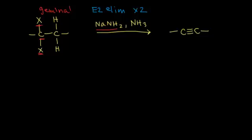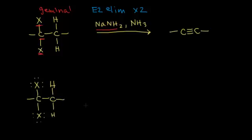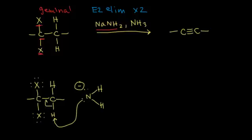Let's look at the mechanism of the double E2 elimination of a geminal dihalide. Starting with our dihalide, we put in all the lone pairs of electrons on our halogens, and we have two hydrogens on this carbon. Sodium amide is a source of amide anions, which can function as a strong base. A lone pair of electrons on our nitrogen is going to take a proton, and these electrons kick in to form a double bond while the other electrons kick off onto our halogen — that's our E2 elimination mechanism.